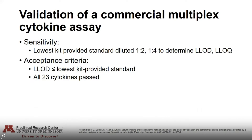Finally, we looked at sensitivity — the ability of the kit to detect low-range concentrations of analytes. We took the lowest kit-provided standard and diluted it at 1:2 and 1:4 to determine the lower limit of detection and the lower limit of quantitation. Our acceptance criteria was that the lower limit of detection was less than or equal to the lowest kit-provided standard concentration, and with this criteria all 23 cytokines passed.